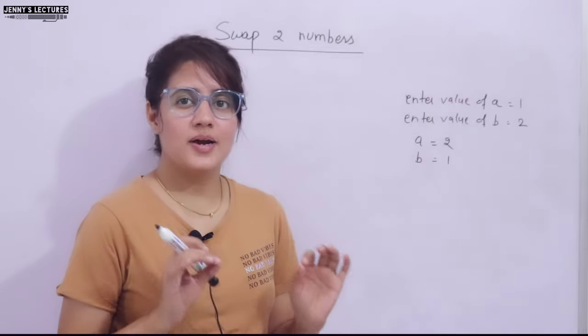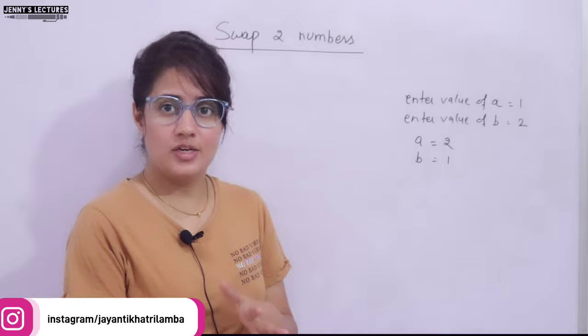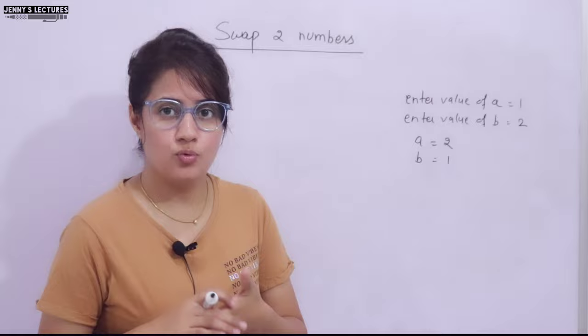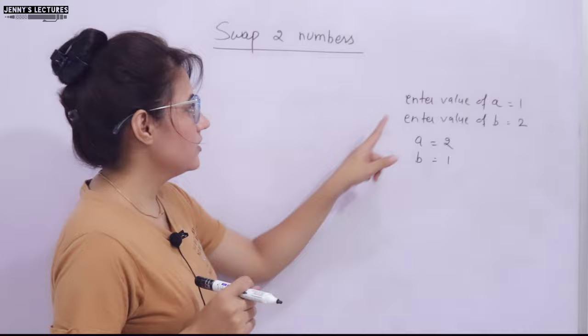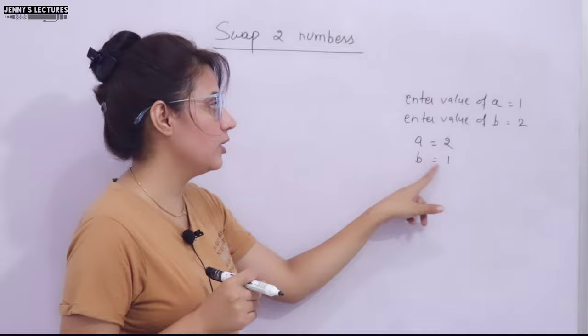In this series on learning Python, in the previous video we discussed variables — how to use them, how to declare them, why we need them — everything with the help of a program and an exercise. Now in this video we'll see a coding exercise: you have to swap two numbers. The output should show 'enter value of a', you enter 1, then 'enter value of b', you enter 2, and after swapping it should print a equal to 2 and b equal to 1.